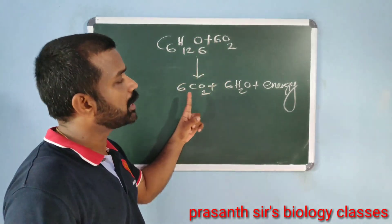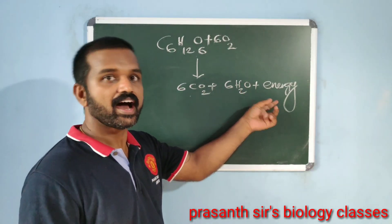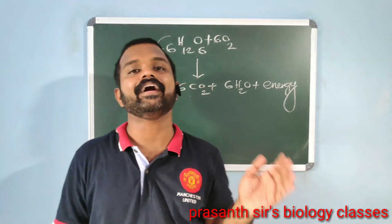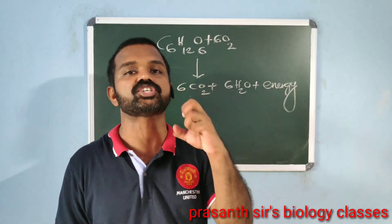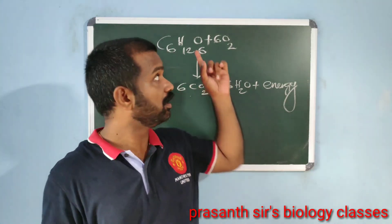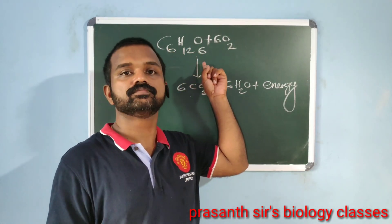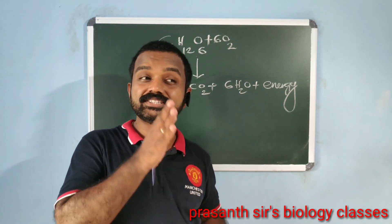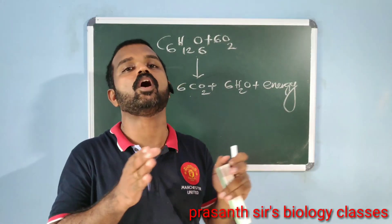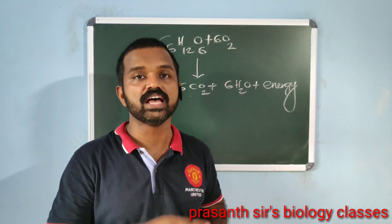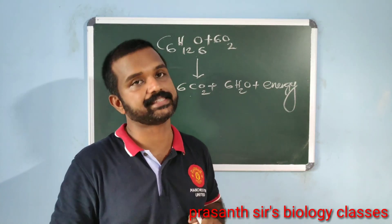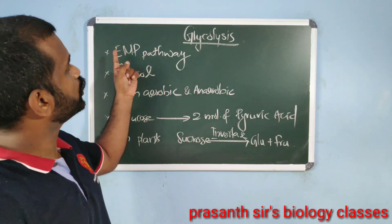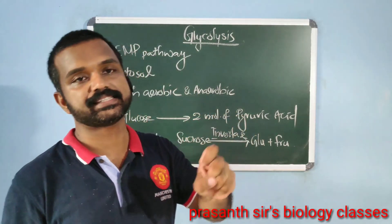During the process of respiration, oxygen is utilized and carbon dioxide, water, and energy are released as products. Both aerobic and anaerobic organisms retain the enzymatic machinery to partially oxidize carbohydrate without the help of oxygen. This partial breakdown or partial oxidation of glucose in the absence of oxygen into pyruvic acid is known as glycolysis.